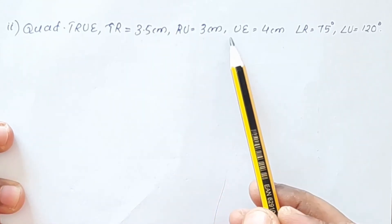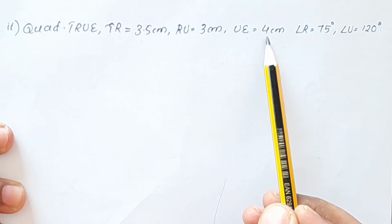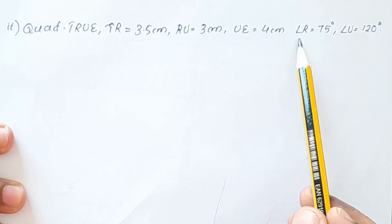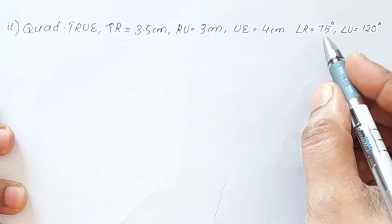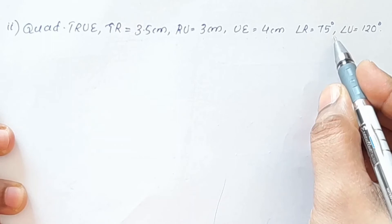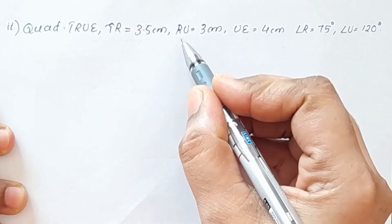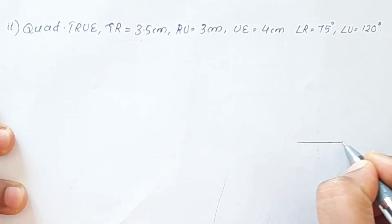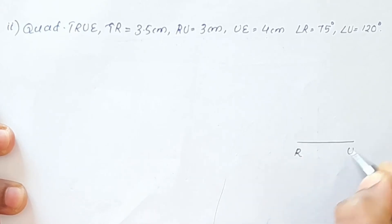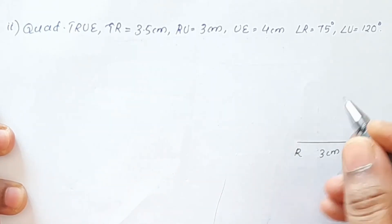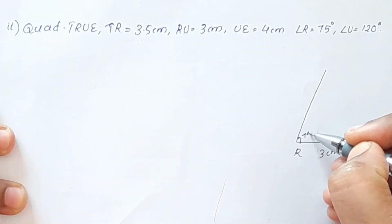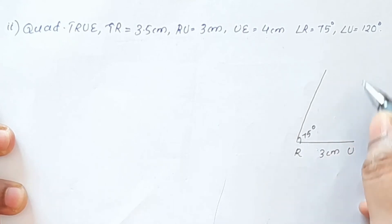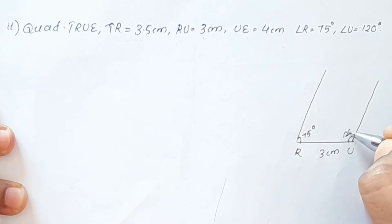RU is equal to 3 cm, U is equal to 4 cm. This point is D, this is 5 cm, and the angle is 120 degrees.